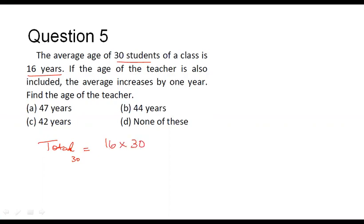That is average into number of observations and that corresponds to 480. So this is the sum of the ages of all these 30 students in this class, that is 480.